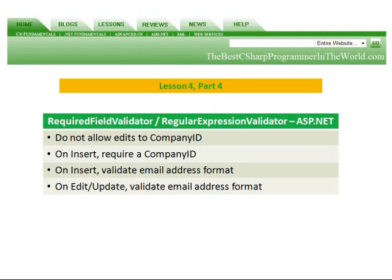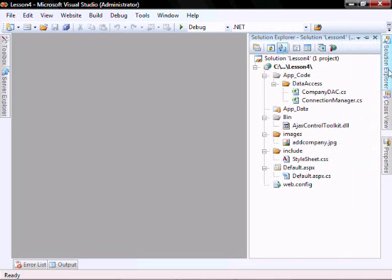In part four, we're going to add validators to our ASP.NET file so that we do not allow edits to company ID. On insert, we require our company ID. On insert, validate email address format. And on edit update, validate the email address format. Disallow changes to the company ID.